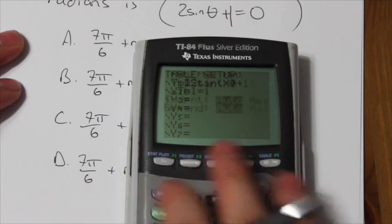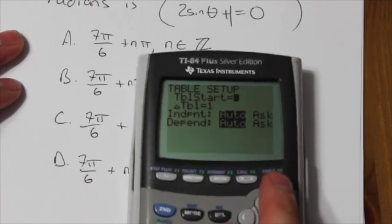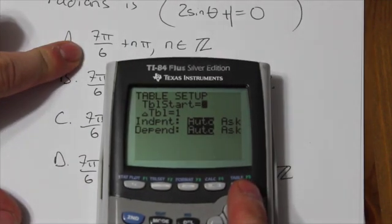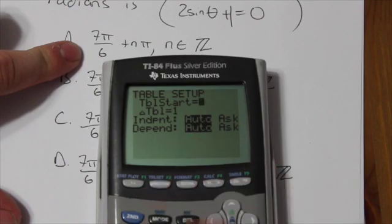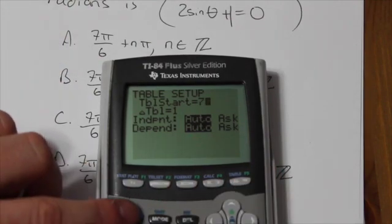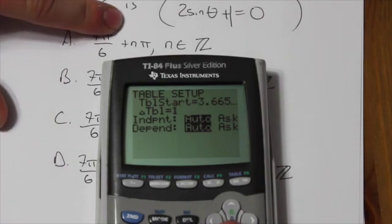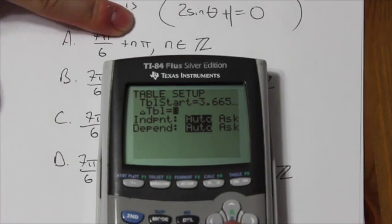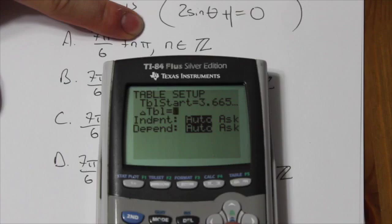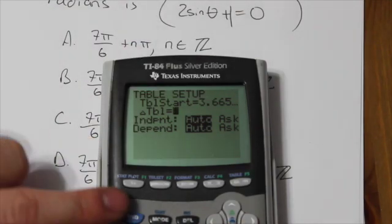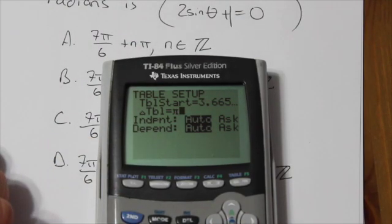Second window. And what I'm going to do here, to test that first set of solutions, I'm going to make my table start at 7 pi over 6. And you'll see here in option A that it's going up by multiples of pi. So what I'm going to do in my delta table is I want my delta table to go up by pi.